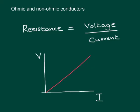Now any conductor that has this relationship between voltage and current is an ohmic conductor, but there are some conductors that do not follow this relationship. And they of course are called non-ohmic conductors.